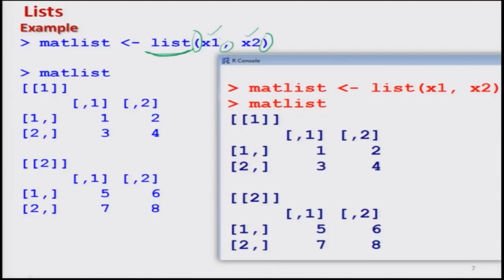Now I am trying to create a list of these two matrices. This can be done by the list command — I simply write 'list' and inside the brackets I write the two matrices separated by a comma. If you have more elements you can continue separating them by commas. I try to store the outcome in a new variable called 'mat.list' so that I can call this value later on.